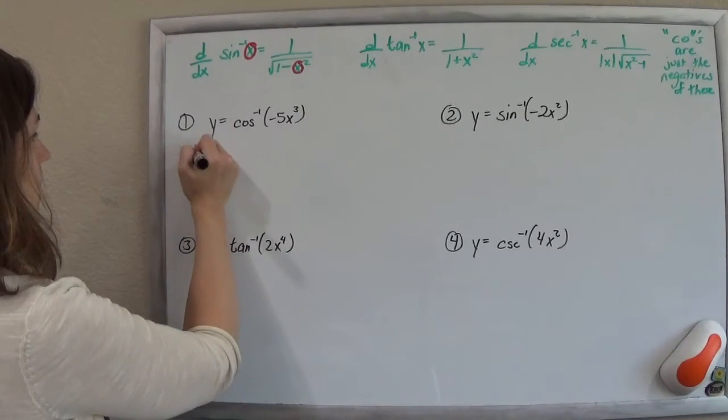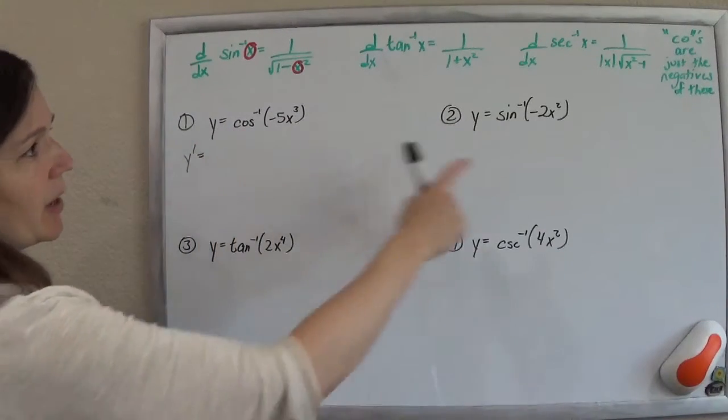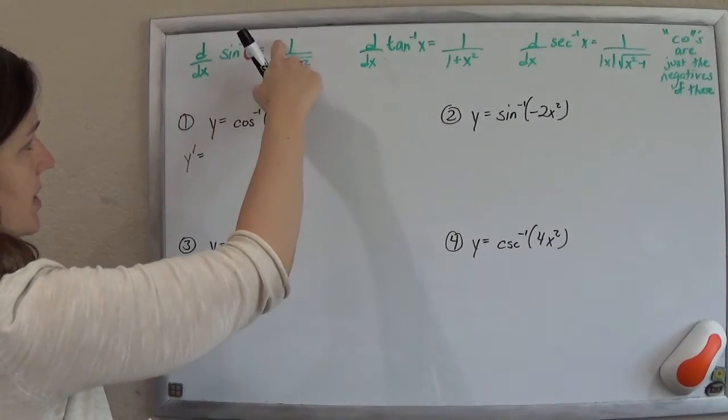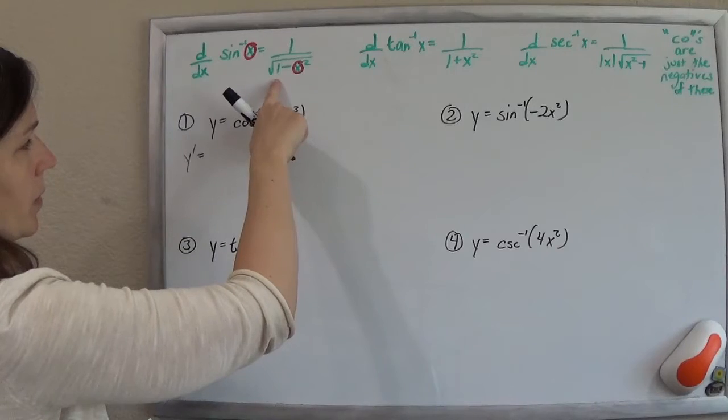So this first one, we're taking the inverse cosine. And over here, I put the note that the cos are just the negatives of these. So the derivative of inverse cosine is just negative 1 over square root of 1 minus x squared.